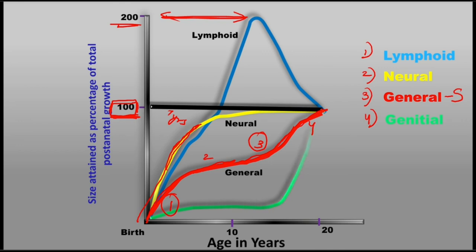The last curve is the genital growth curve. It is characterized by slight growth in infancy, followed by a latent period during most of childhood where there is essentially no growth of these tissues. They then experience rapid growth and maturation during the adolescent growth spurt. These are the four growth curves that Scammon describes.